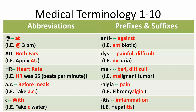The prefix 'mal' means bad or difficult — for example, a malignant tumor, which is not a good tumor. The suffix '-algia' means pain — for example, fibromyalgia.